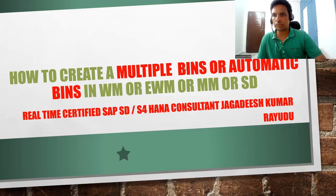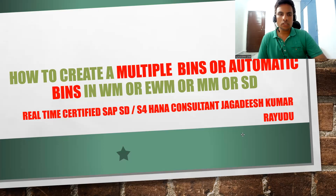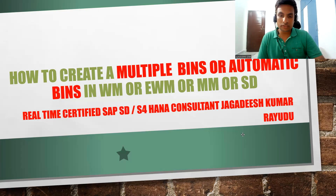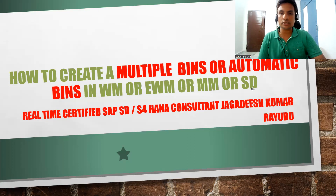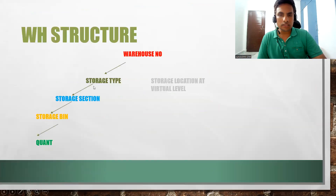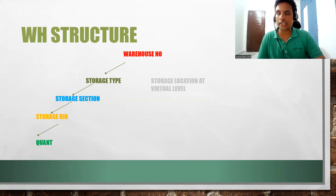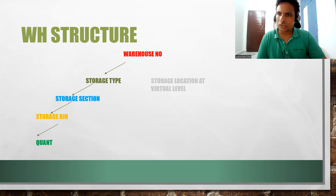Welcome back, students and professionals. This is another important session on how to create multiple bins or automatic bins in warehouse management and EWM. The transaction code is LS10. Previously we have seen that we created a single bin using master data. Now we are creating bins using configuration — automatic generation of bins — ten thousand, five thousand, one thousand, or however many you want.